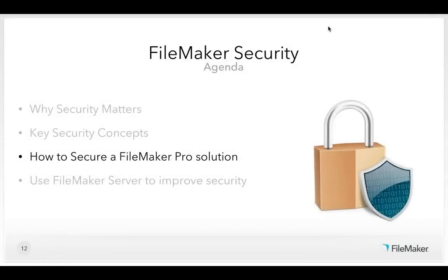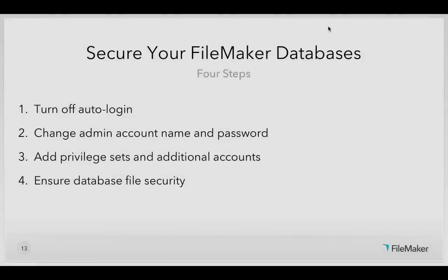So now to take stock — we've talked about why security matters and some key concepts. Now I'm going to demonstrate and discuss how to secure your FileMaker solutions. There are really four things to think about when you secure a specific FileMaker database: turn off auto-login, change the full access or admin account name and password, add privilege sets and additional accounts for all users, and take steps to ensure the integrity and security of the database file itself.